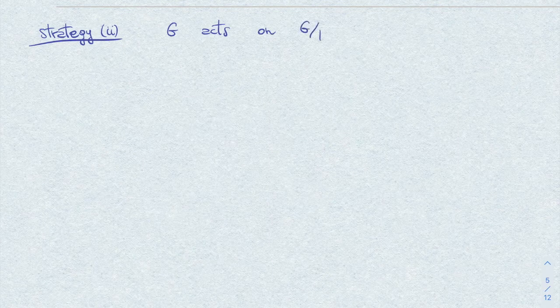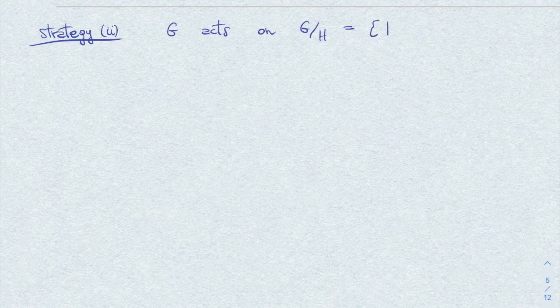Now let's proceed to the second strategy. That is, we want to realize H as the kernel of some morphism. Now for this, we observe that G as a group acts.